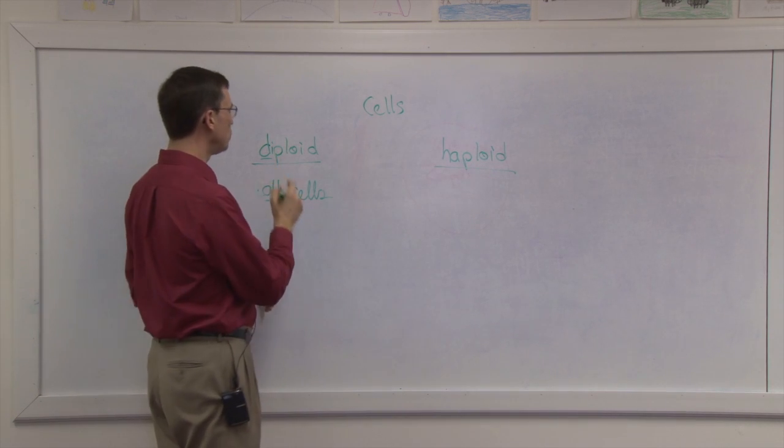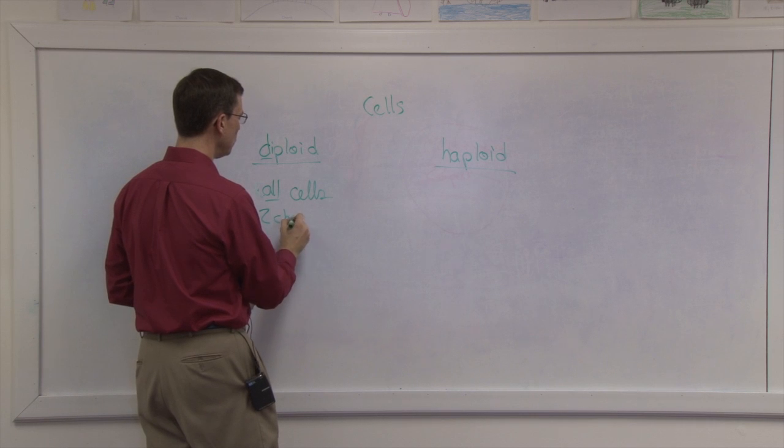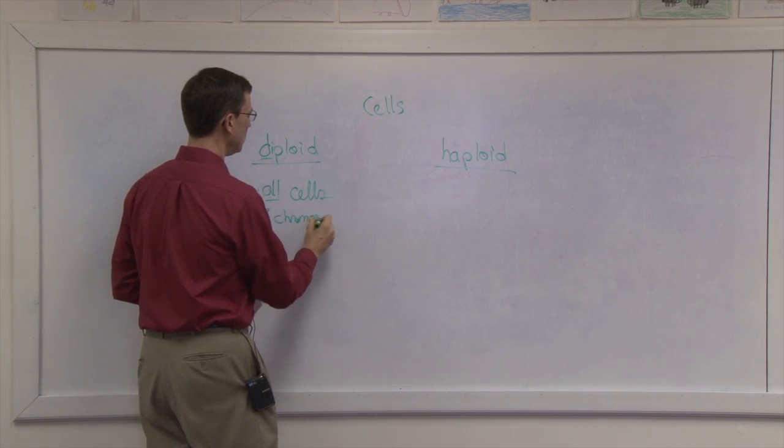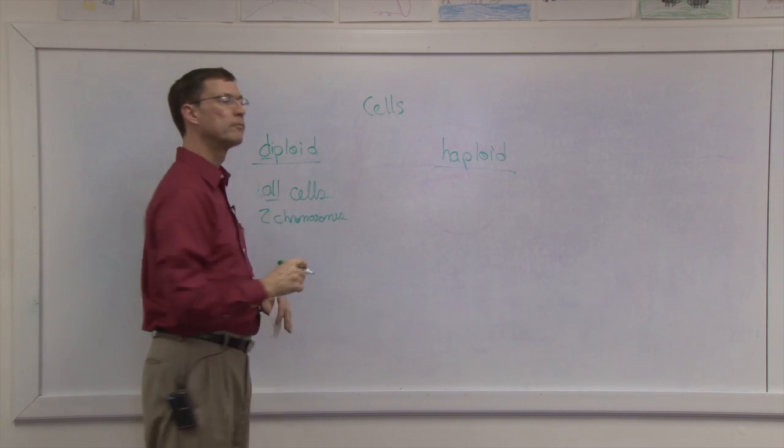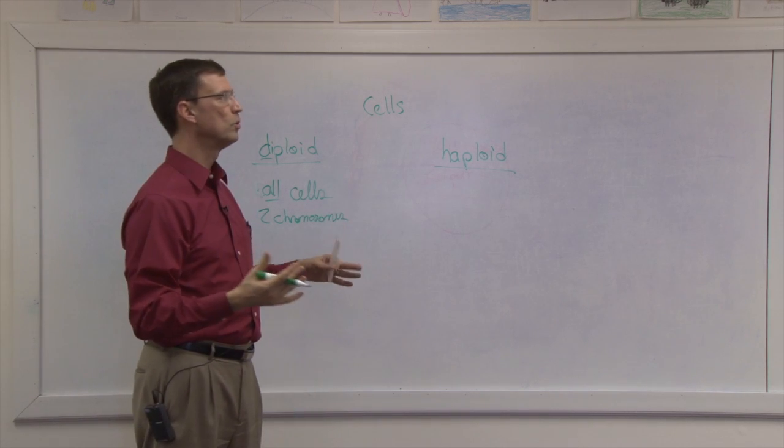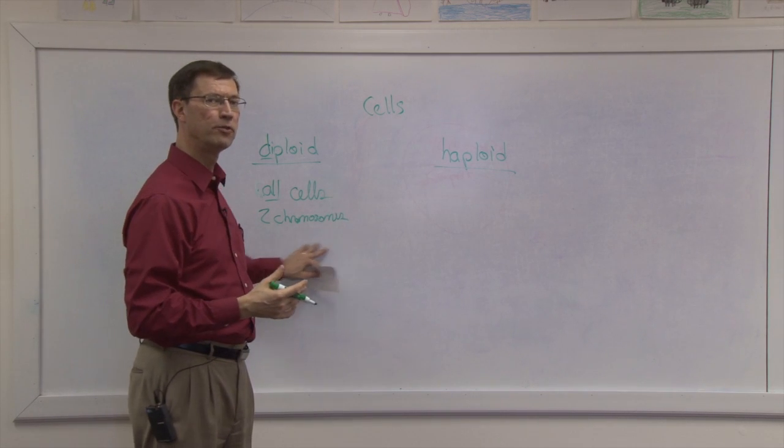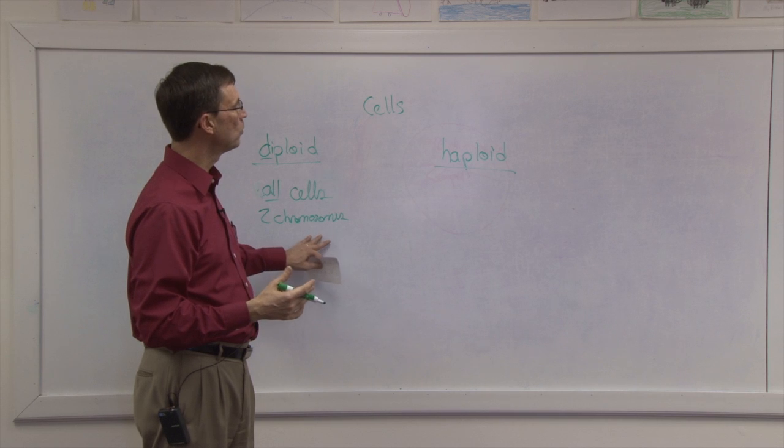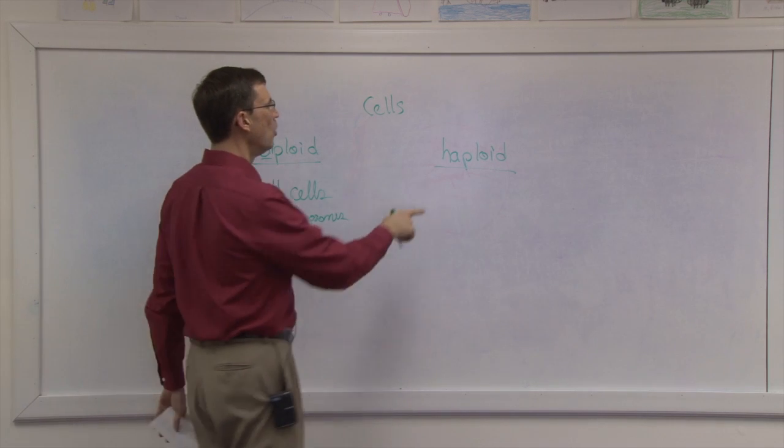And that means we have two chromosomes for every trait. One from dad, one from mom. So this is the full complement, the full set of 46 chromosomes, 23 pairs. Over here, the haploid are very unique cells.